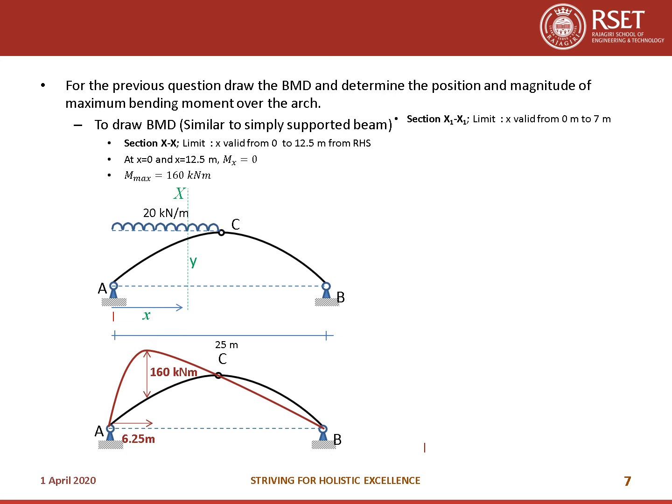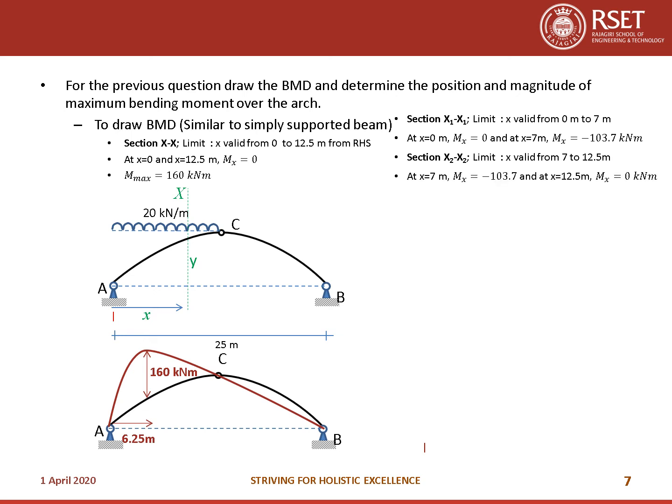Draw the two BMD components separately and add them to get the total bending moment diagram for the full arch. You can also use Eddy's theorem, obtaining the funicular polygon profile and applying it. For a UDL-only case, you must also find the negative maximum bending moment between C and B using dM/dX = 0.